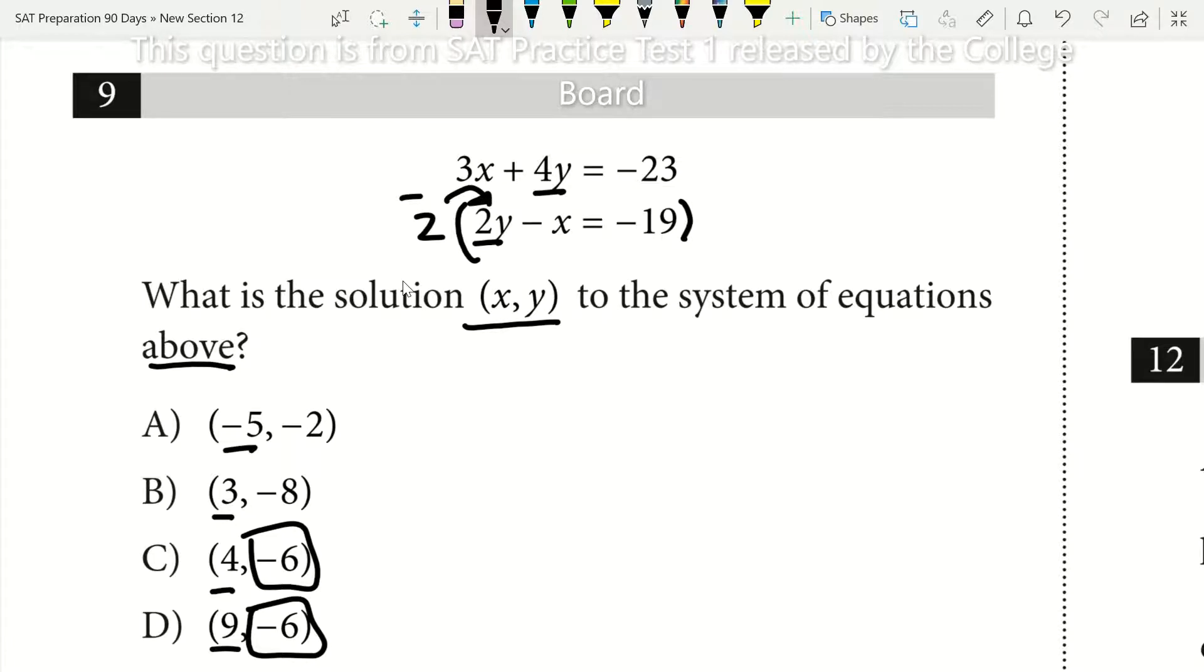Then I'm going to subtract it. So I have 4y minus 4y. That gets rid of my y's, so I'm going to have 0y. I'll have 3x minus 2 times negative x. 2 times negative x gives me negative 2x. If I'm subtracting negative 2x, that's adding 2x. So I have 3x plus 2x, which will give me 5x.